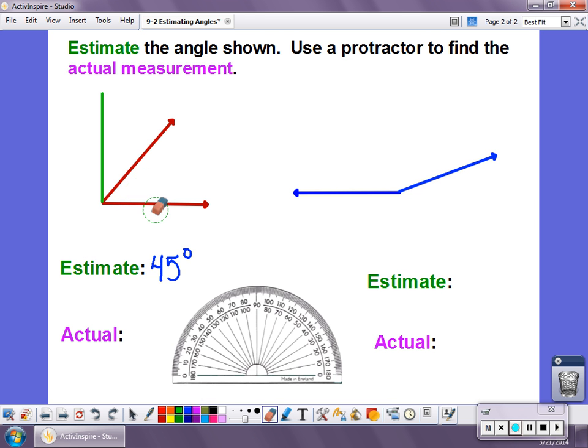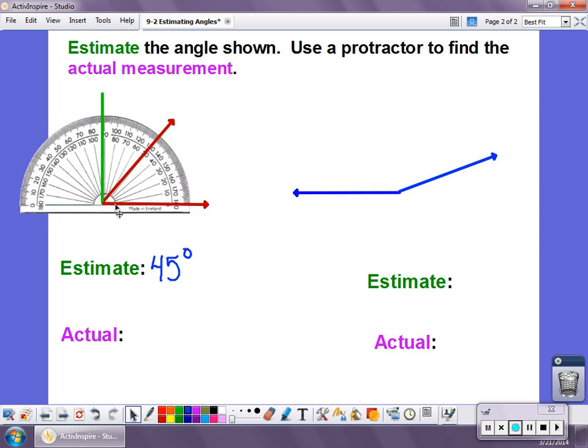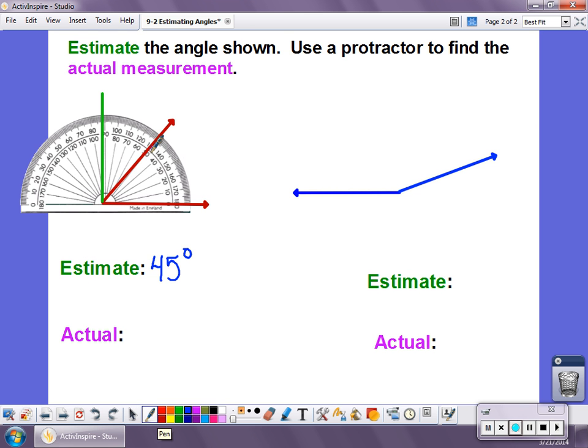Now, whenever you make an estimate, you always want to double check it. So let's put our protractor here. And when I put my protractor on, I can see that this is actually a little more than 45 degrees. It comes all the way up to here, which is 50 degrees. So that was actually a pretty good estimate.